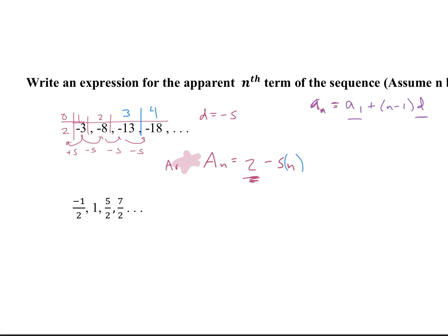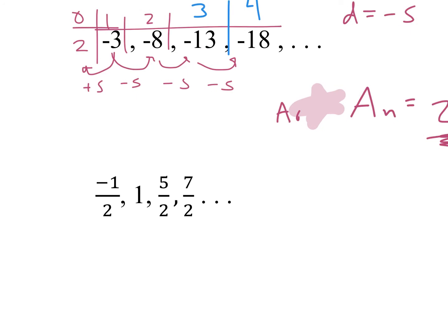Here we have negative 1 half, 1, 5 halves, 8 halves. There was a correction — it should be 8 over 2, which makes this 4, not 7. When you see a pattern of fractions, it helps to make everything over 2 so we can see the pattern on the top — the denominator stays the same. As we go to the next term, we are adding 3 in our numerator. Our denominator stays as 2, so we're adding 3 halves.